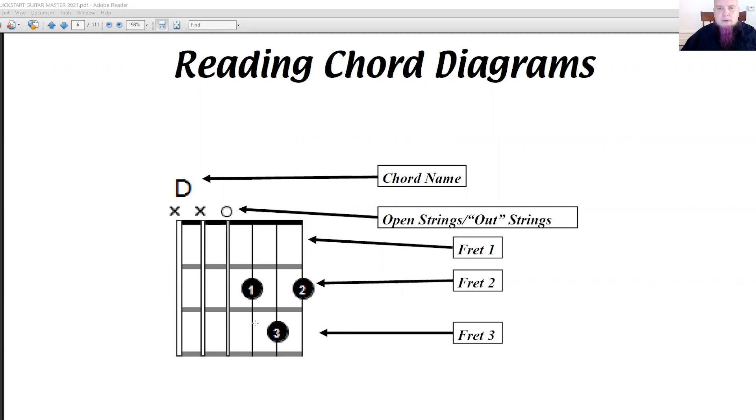Now, the black dots are going to be your fingers on the guitar. Your index finger is your one finger, your middle finger is your two finger, your third finger is your ring finger, and if we had a fourth, it would be the pinky finger. Some chords have the pinky finger.